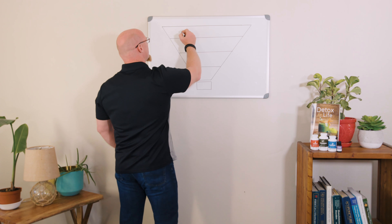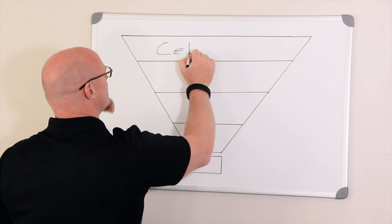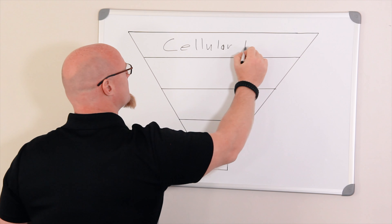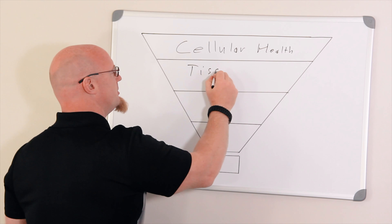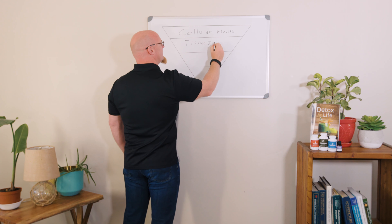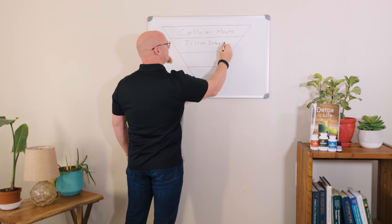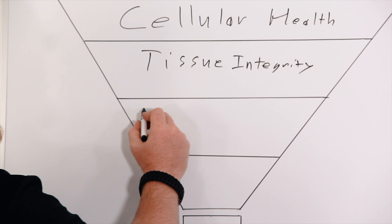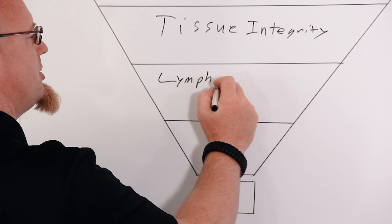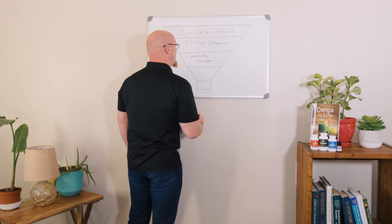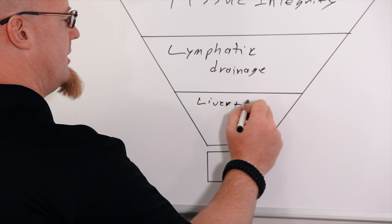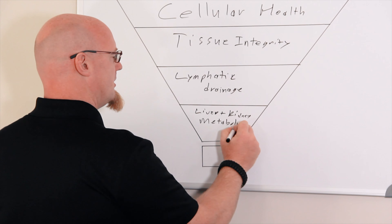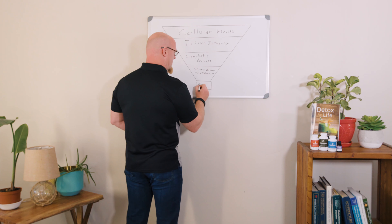Here at the top we have cellular health. Next we have tissue integrity. Then we have lymphatic drainage. Then we have liver and kidney metabolism. And then colon health.